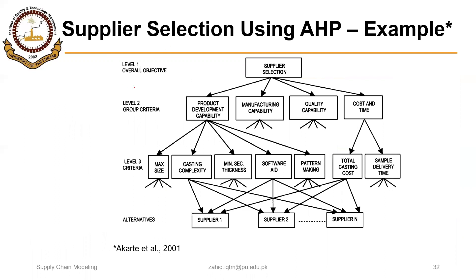In AHP, this is a hierarchical approach. First there is an objective, then there are some criteria, and these criteria could have sub-criteria as well. The third level is alternates. Here the goal is supplier selection. For example, product development capability is defined as the maximum size of casting the organization can make, complexity of casting, minimum section thickness, software aid, and pattern making — five sub-criteria that collectively define this main criterion.